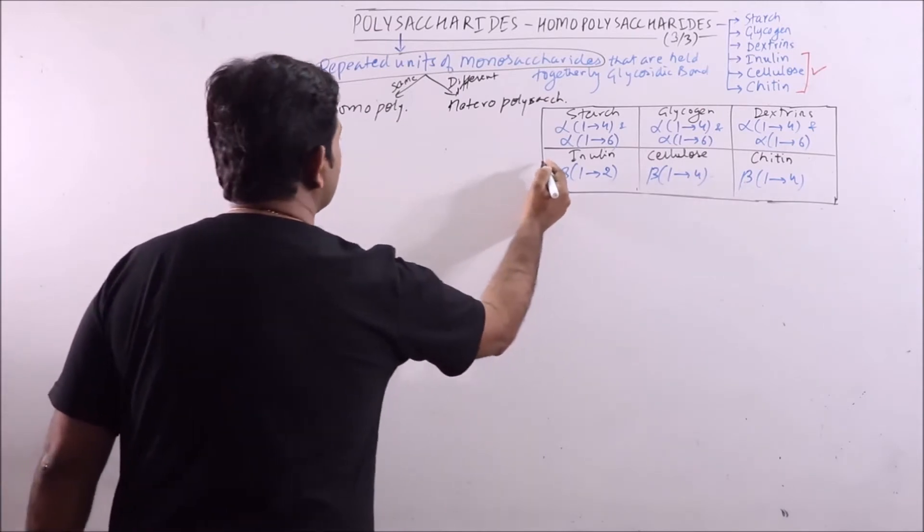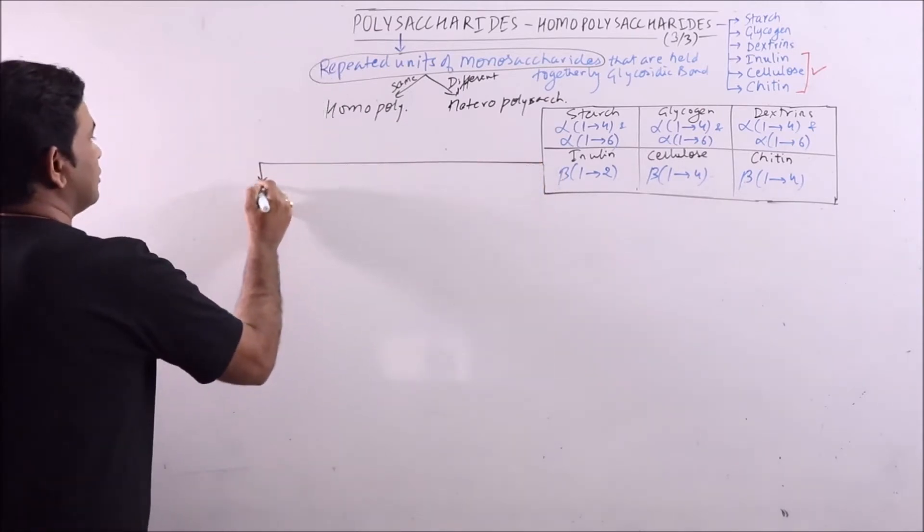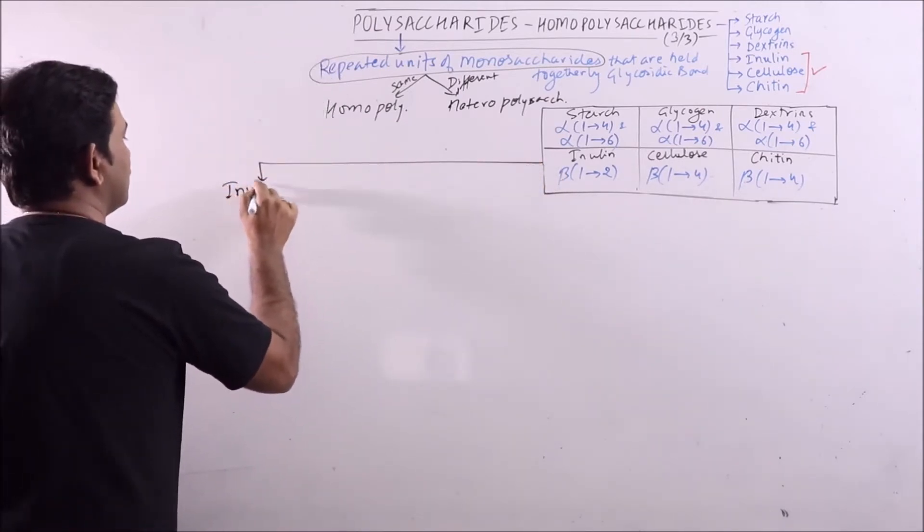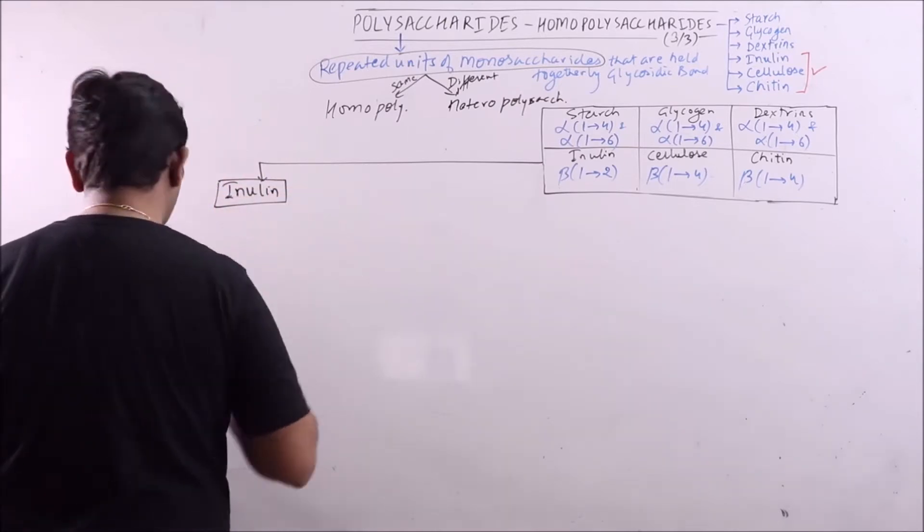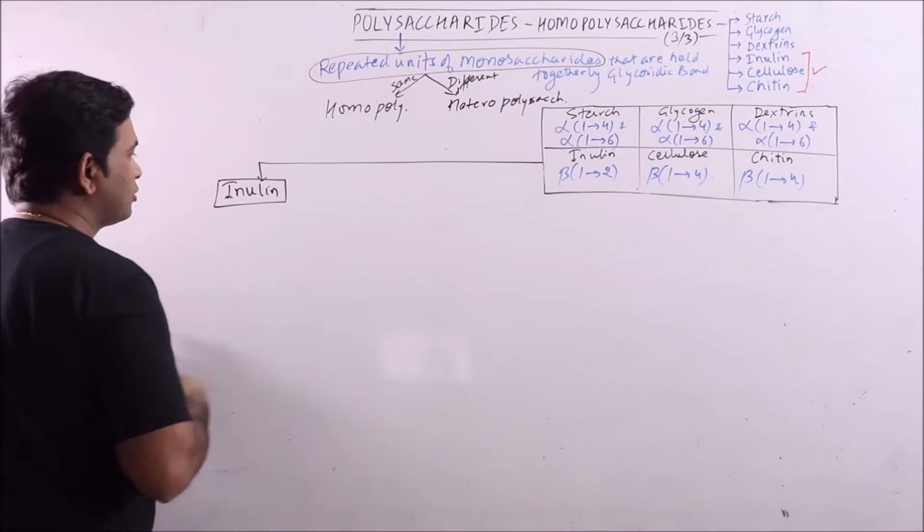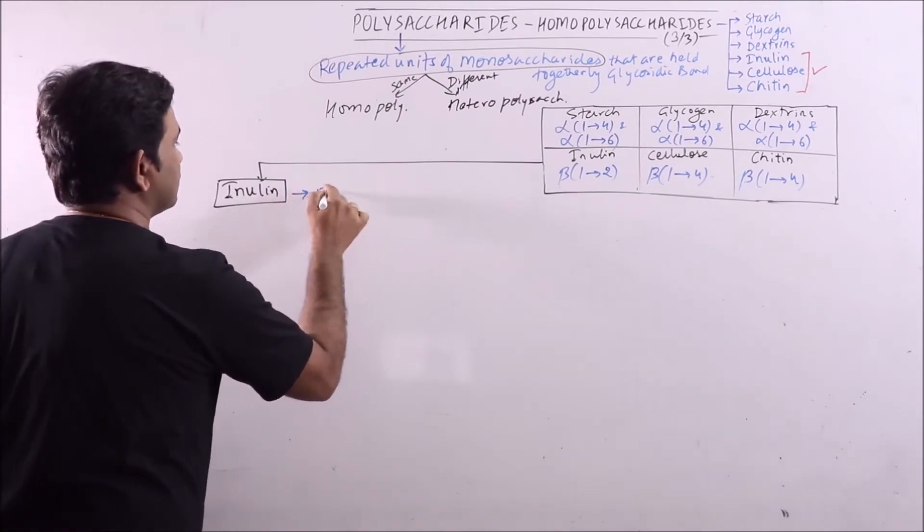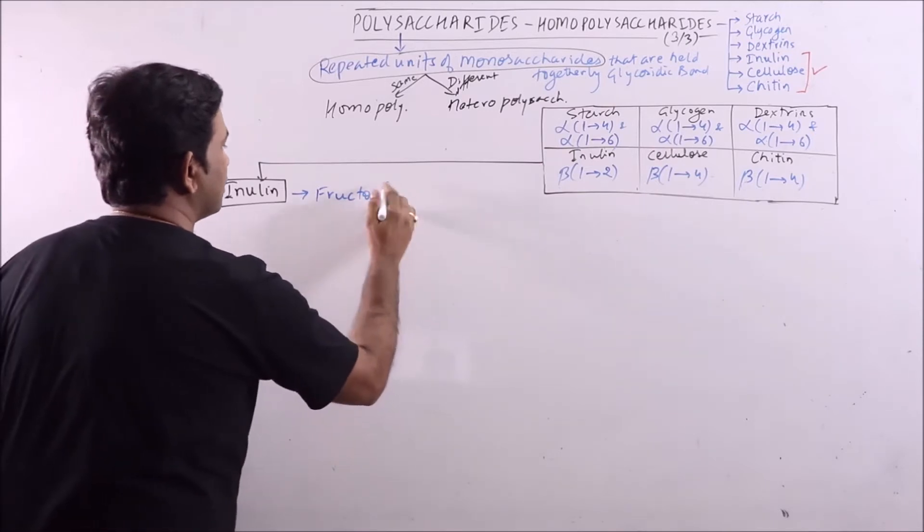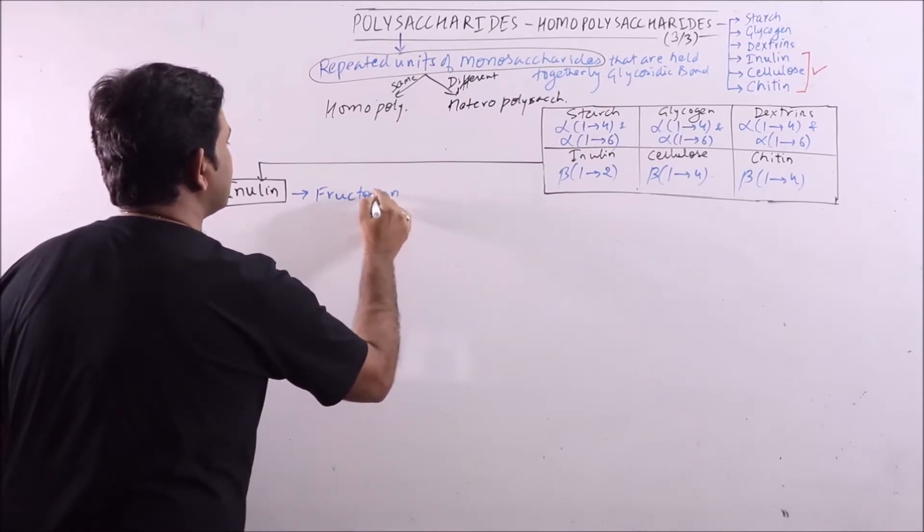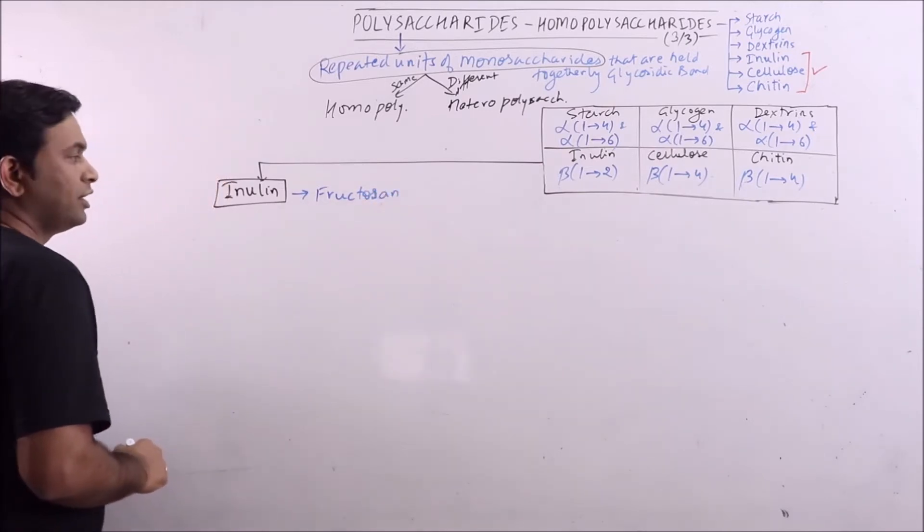First of all, I will discuss the inulin. Inulin is fructosan, that is the unit is fructose, D-fructose.